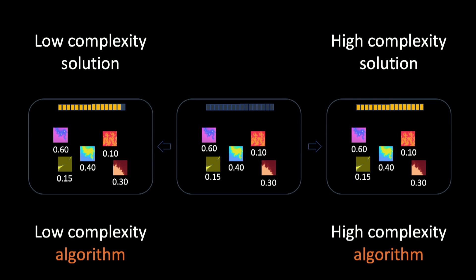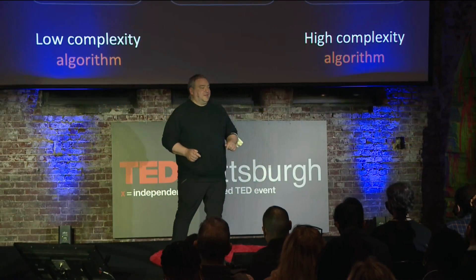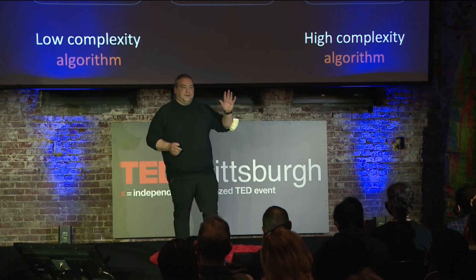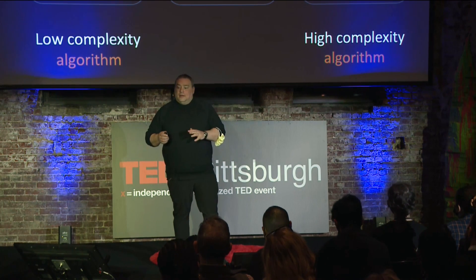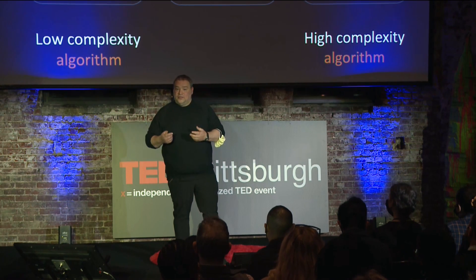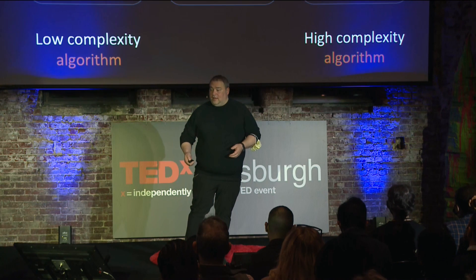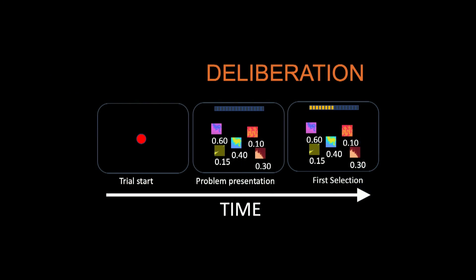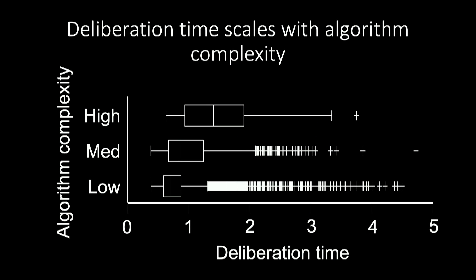The fundamental difference between these types of algorithms: for the low complexity algorithm, finding the biggest item among five requires only five operations. But if you search the space of combinations for five items, that's 32 operations. So we might expect that when the monkey applies a highly complex algorithm, he takes longer. We measure the time between when we show him the problem and when he makes his first selection, and indeed, as the complexity of the internal mental process increases, the deliberation time also increases.